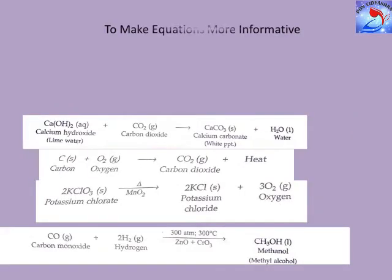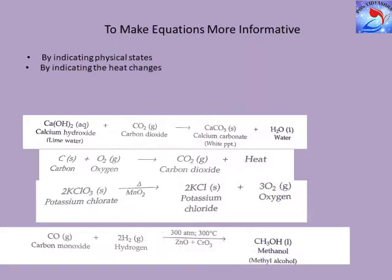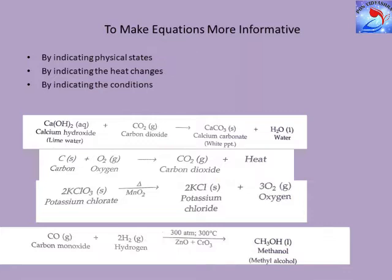Chemical equations can be made more informative in three ways: by indicating the physical states of the reactants and products, by indicating heat changes, and by indicating conditions. There are four physical states: solid (s), liquid (l), aqueous solution (aq), and gas (g). For example: calcium hydroxide (aq) + carbon dioxide (g) → calcium carbonate (s) + water (l).